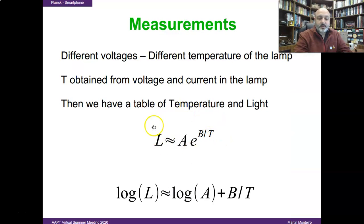Then, from Wien's equation, we could perform a plot of the logarithm of the light intensity measured by the smartphone, as a function of the inverse of the temperature, like in this plot.